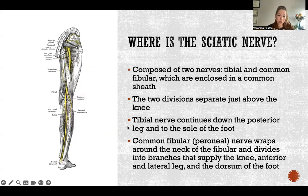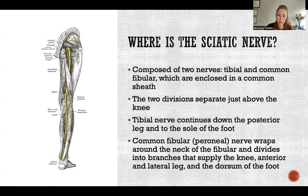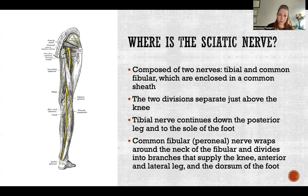The sciatic nerve is actually composed of two separate nerves that are enclosed in a common sheath. Those two separate nerves are the tibial nerve and the common fibular nerve, which is also referred to as the common peroneal nerve. These two divisions of the sciatic nerve actually separate just above the knee.